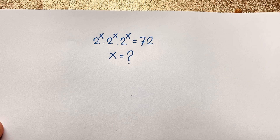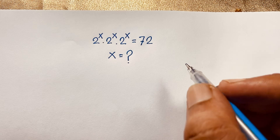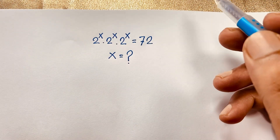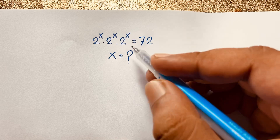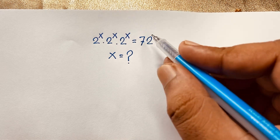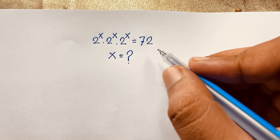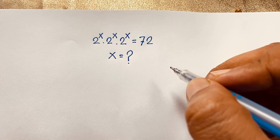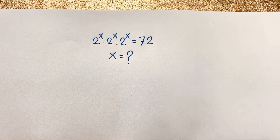Hello everyone, welcome to my YouTube channel. Today we have solved a nice math problem. This question is 2 to the power x times 2 to the power x times 2 to the power x is equal to 72. We'll find out what is the value of x in this exponential math problem.